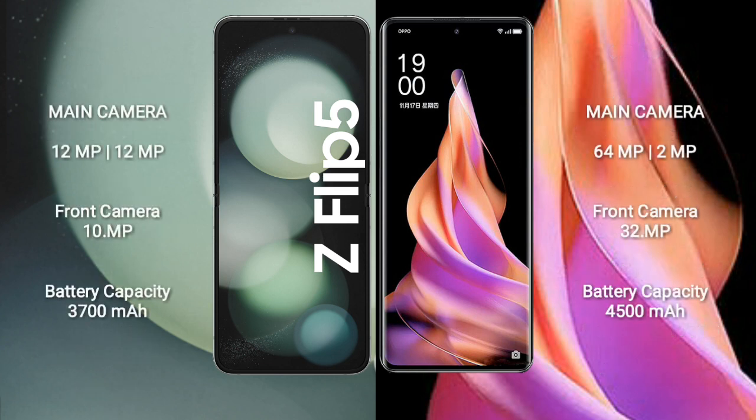Samsung Galaxy Z Flip 5 features a rear dual-camera setup with 12MP plus 12MP and a 10MP front camera. Oppo Reno 9 features a rear dual-camera setup with 64MP plus 2MP and a 32MP front camera.